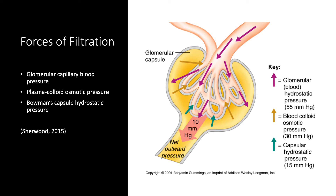Glomerular capillary blood pressure has an average value of 55 mmHg, which is higher than any capillary blood pressure elsewhere in the body. This higher blood pressure is due to the larger diameter of the afferent arterioles compared to the efferent arterioles. Because blood can flow more rapidly into the glomerulus through the wide afferent arterioles than it can leave through the narrow efferent arterioles, glomerular capillary blood pressure is maintained high as a result of blood damming up in the glomerular capillaries.